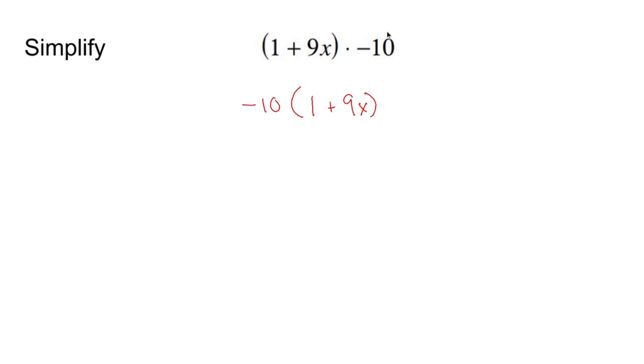Again, it doesn't matter whether you go this way or this way and say negative 10 times 1 is negative 10 and negative 10 times negative 9 is positive 9, silly me. Negative 10 times positive 9 is negative 90.